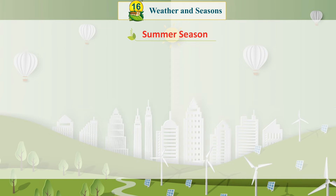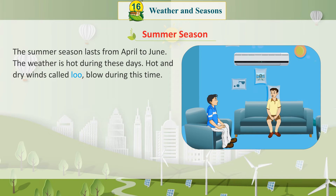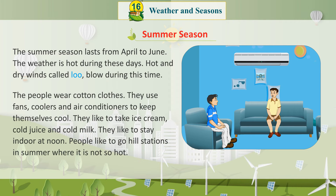Summer Season: The summer season lasts from April to June. The weather is hot during these days. Hot and dry winds called loo blow during this time. The people wear cotton clothes and use fans, coolers and air conditioners to keep themselves cool.